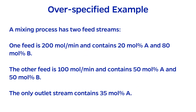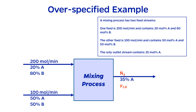Perhaps a quick example to clear this up. Let's say we have a mixing operation with two streams going in and one stream going out. One feed stream flows at 200 moles per minute and contains 20 mole percent A and 80 percent B. The outlet stream contains 35 mole percent A. If I draw and label my block flow diagram, I could tell you right now that this short problem is over-specified, and by the end of the video I hope that you will be able to perform the degree of freedom analysis and agree with me.